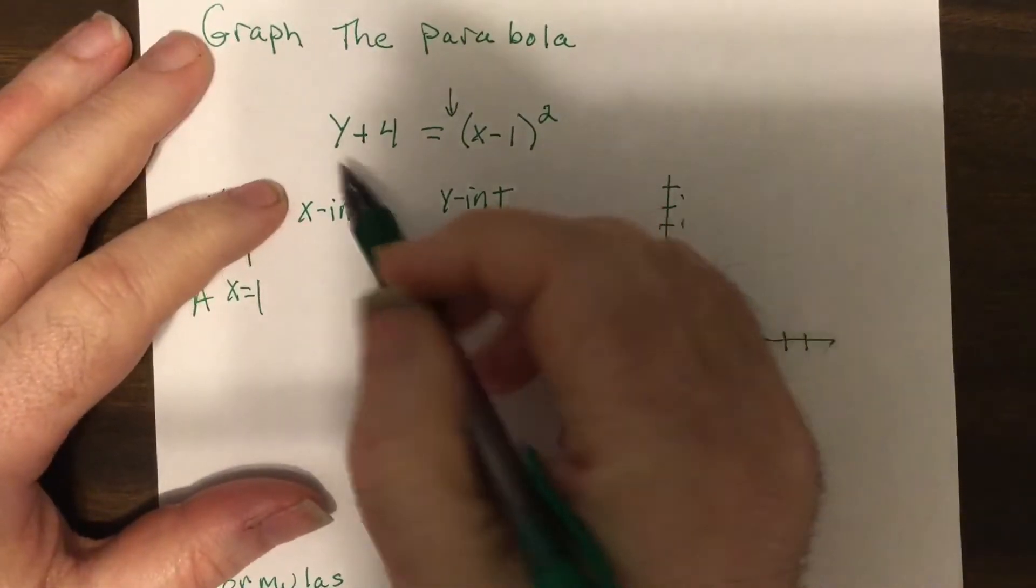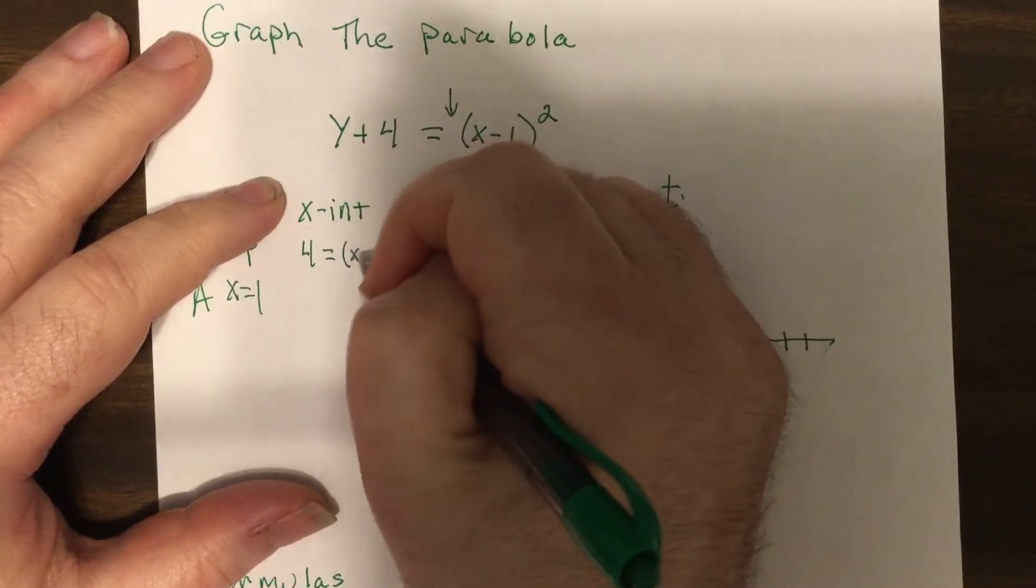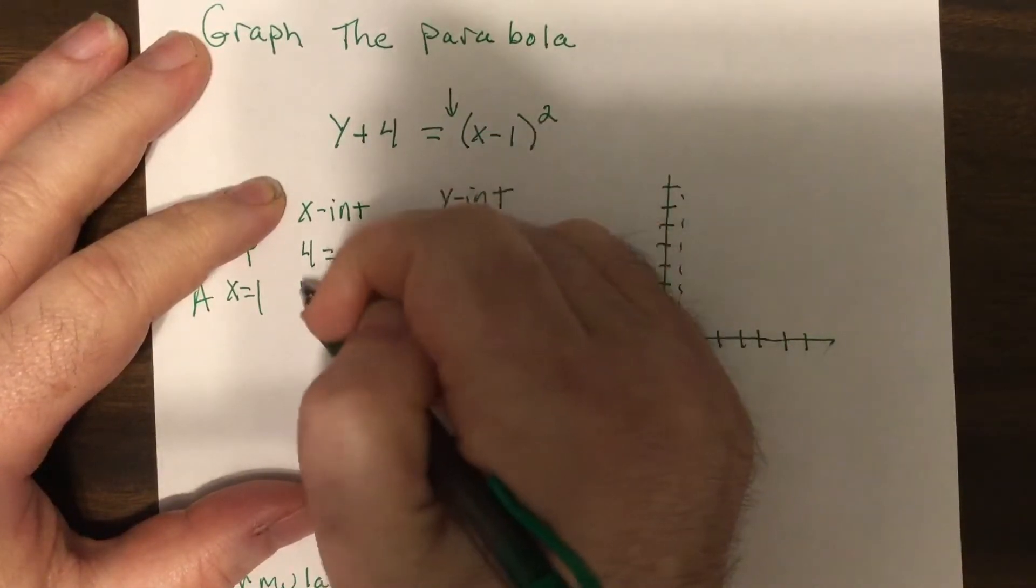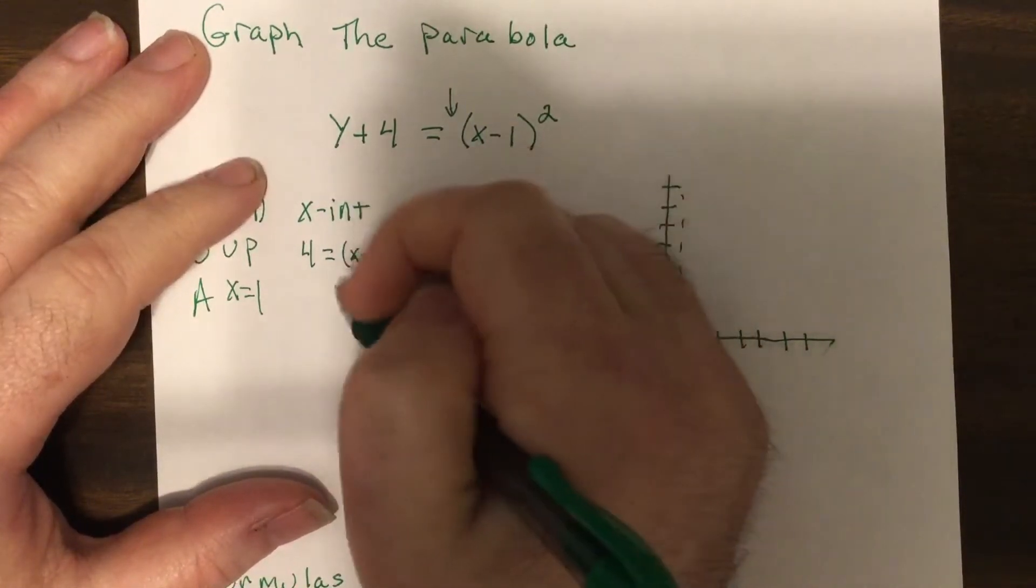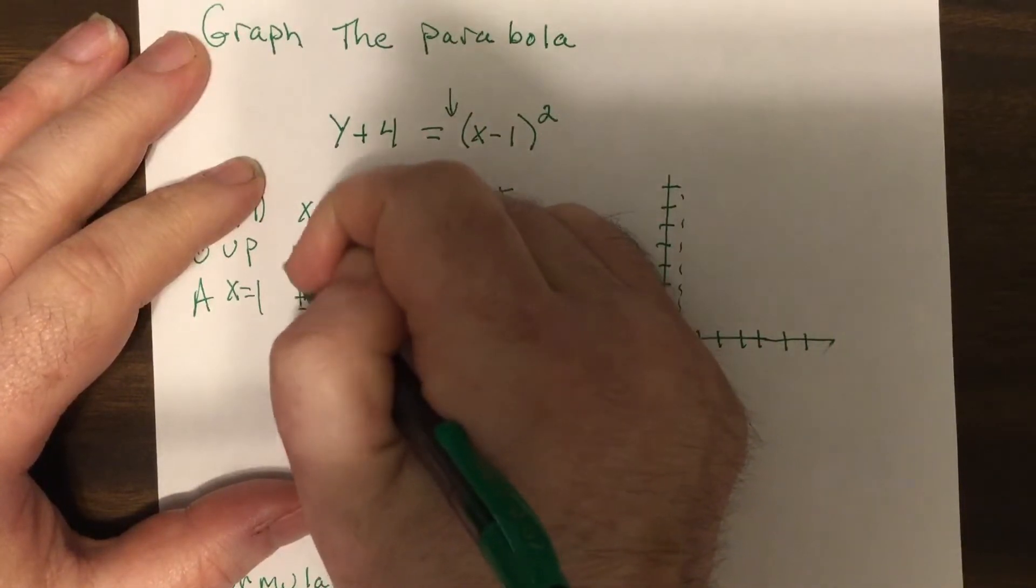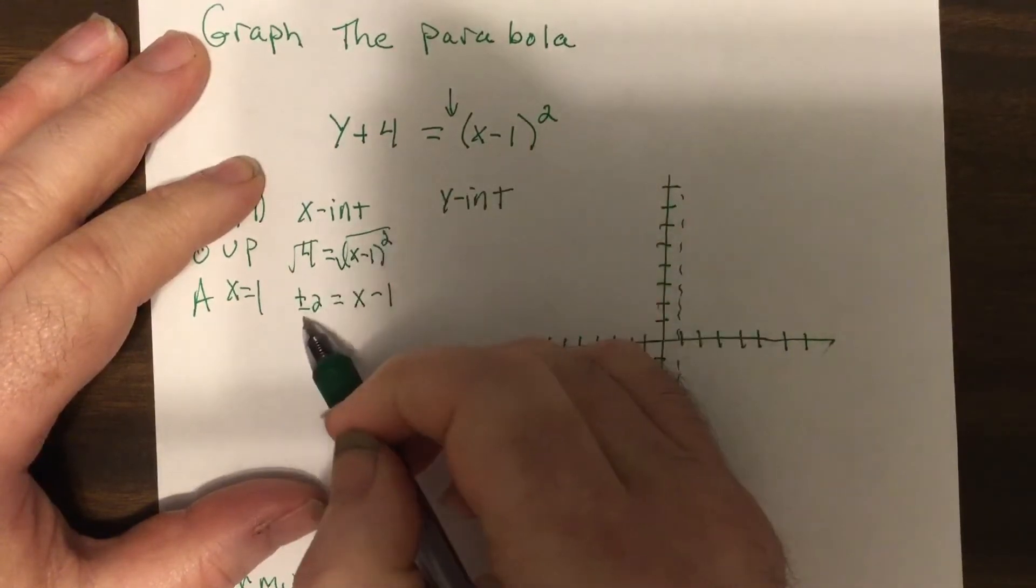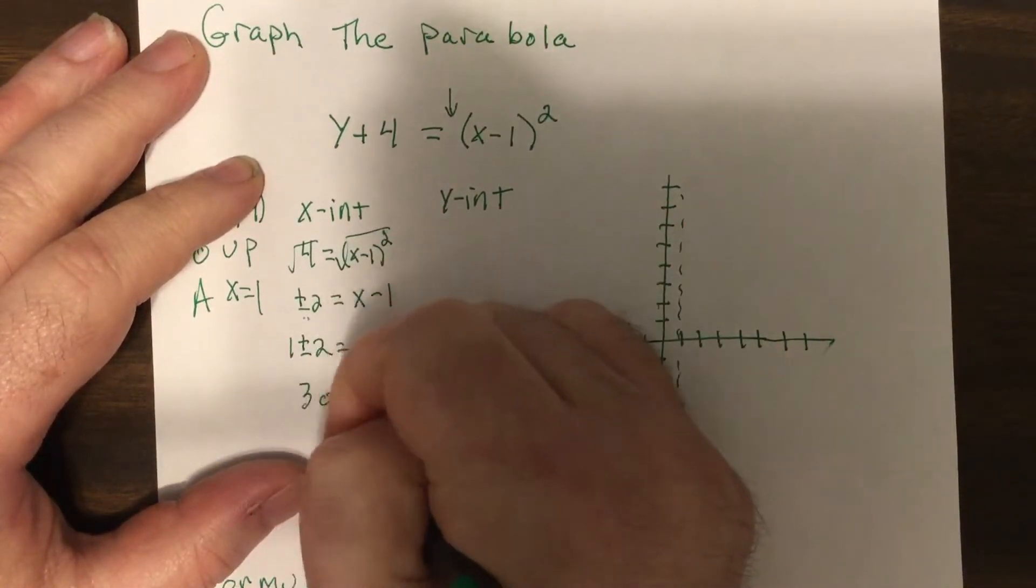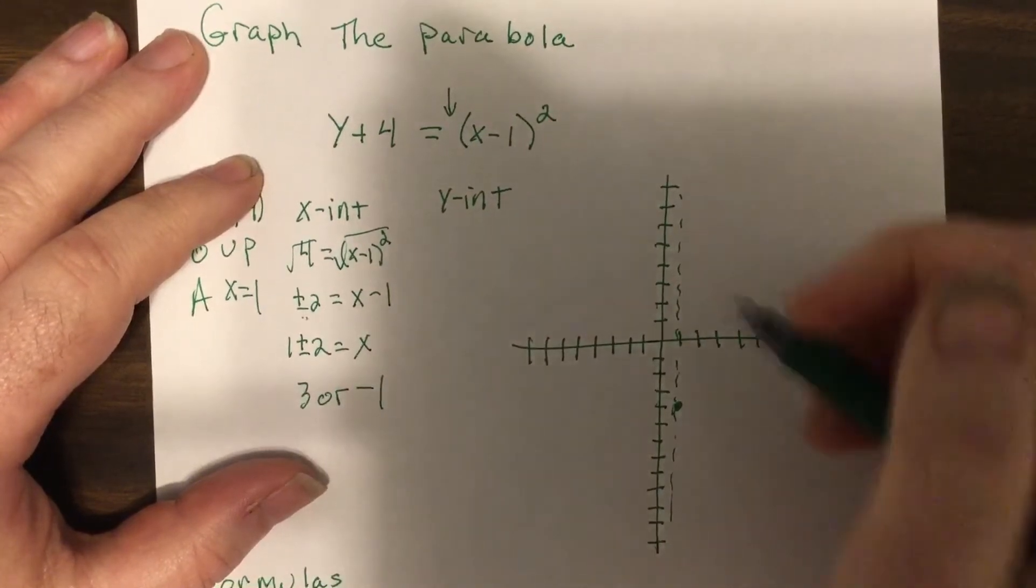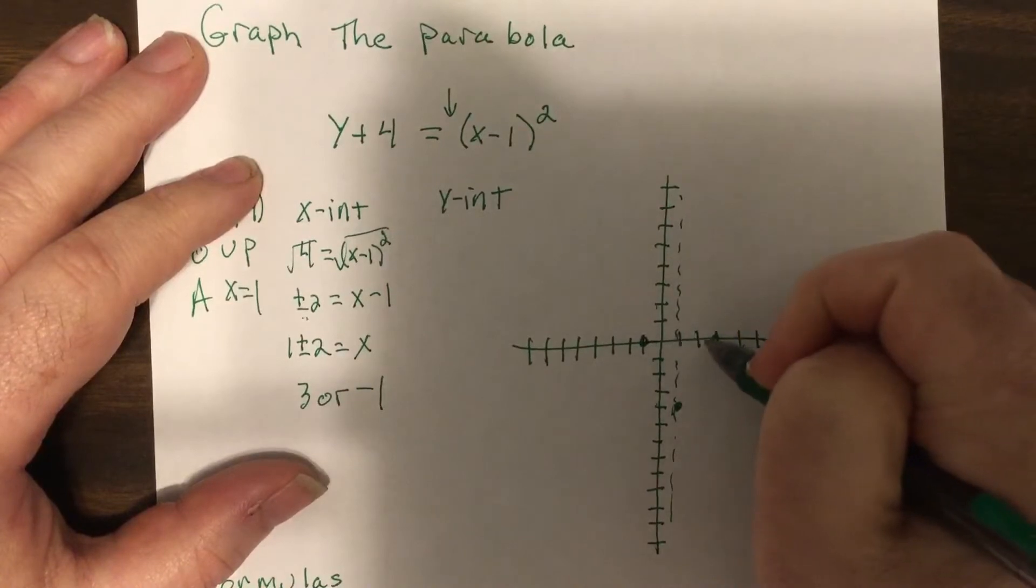Now the x-intercept, put zero in for y. So four equals x minus one squared, square root both sides. So it'd be plus or minus two equals x minus one. Now most people forget the plus or minus two. We're going to add one to both sides. So it'd be three or negative one. So three, negative one. Notice they're both two units from the axis, so that's probably correct.